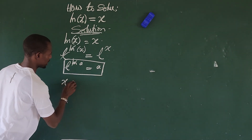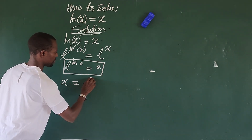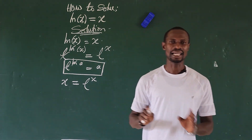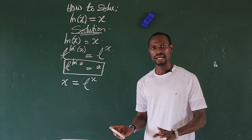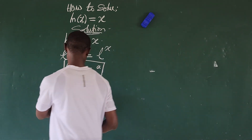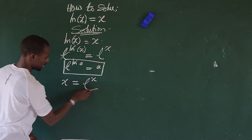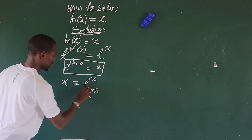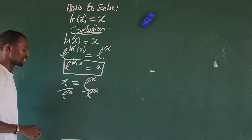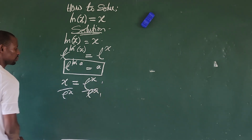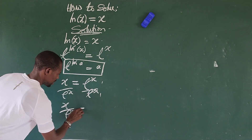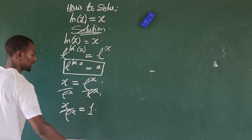Applying this law, the ln drops out and we are left with x. So we now have x = e to the power of x. Now we want to make the right-hand side unity, so we divide both sides by e to the power of x. This leaves the system, so we now have x over e to the power of x equal to 1.